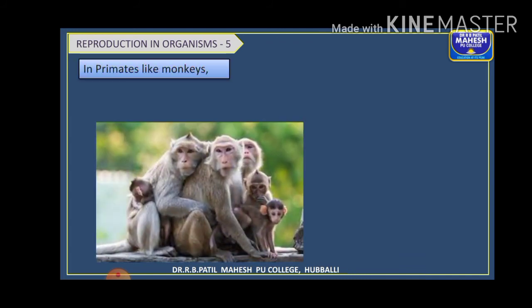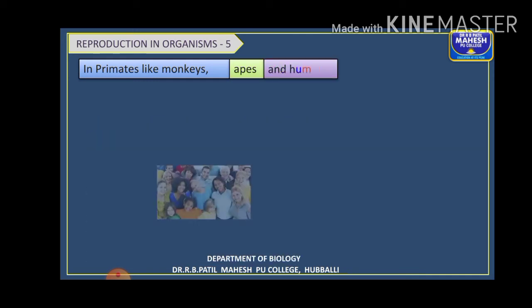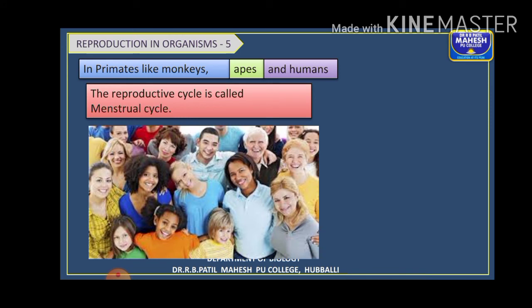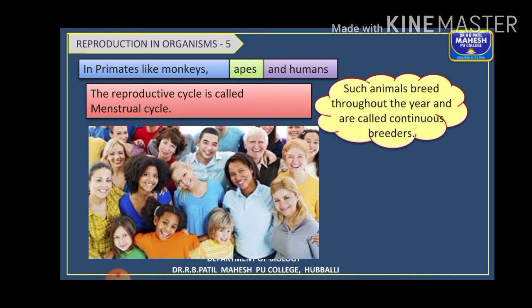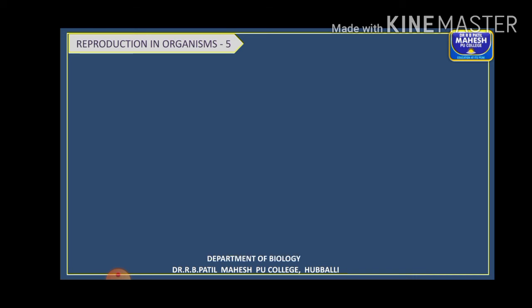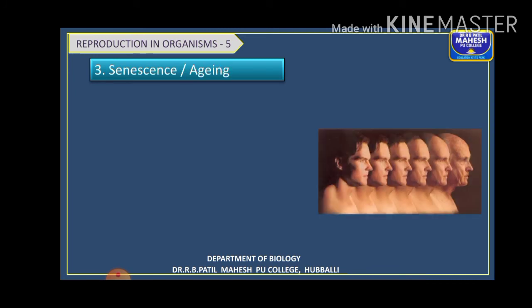In primate females like monkeys, apes, and humans, the reproductive cycle is called the menstrual cycle. These animals breed throughout the year and are called continuous breeders. During the menstrual cycle, there is periodic sloughing off of the inner lining of the womb — the endometrium — which is passed out along with blood as menstruation. This menstruation is absent in organisms that show the estrus cycle.